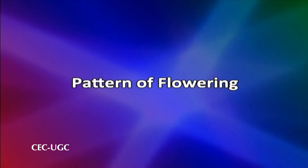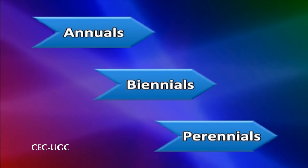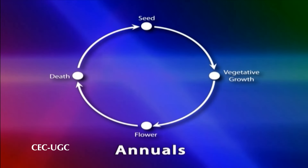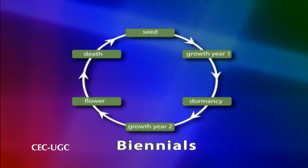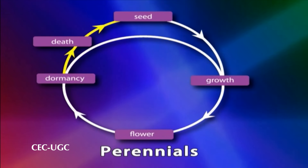Now we will talk about pattern of flowering. A large number of plant species flower after some period of vegetative growth, irrespective of the season. But some plants flower only in a particular season of the year. Based on the duration taken by them to produce flowers, plants have been classified into annuals, biennials, and perennials. Annuals complete their vegetative growth and flowering in one season and then they die. Biennials produce vegetative growth in one season and flower in the next season. Perennials remain for many years and flower seasonally.